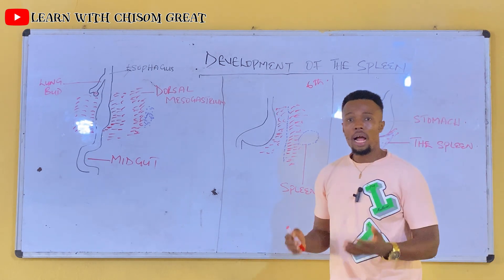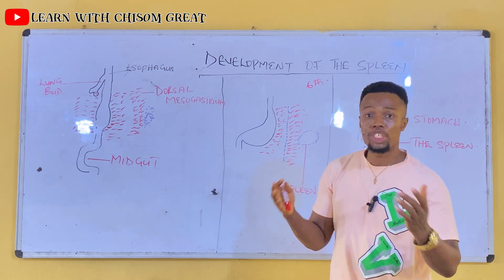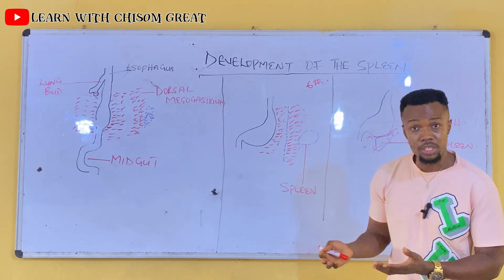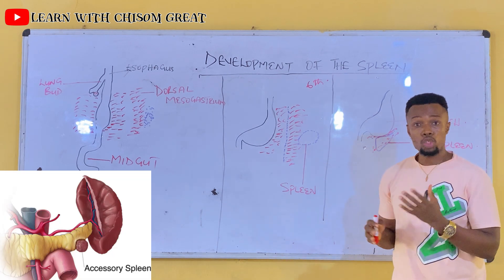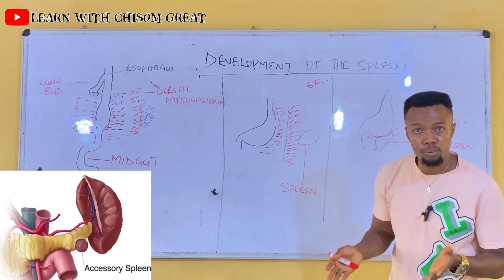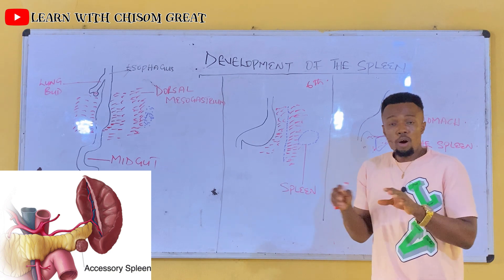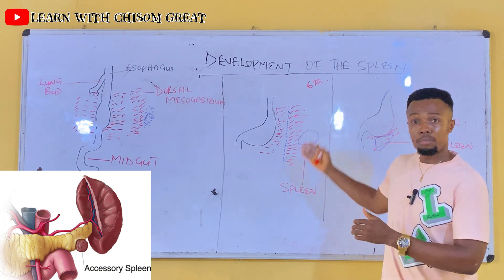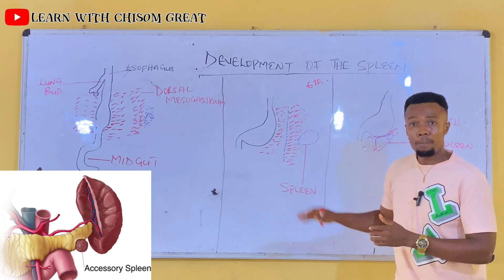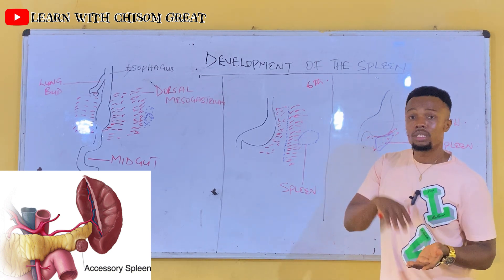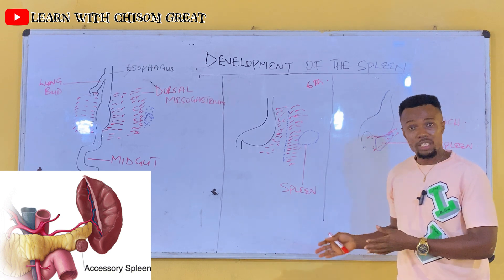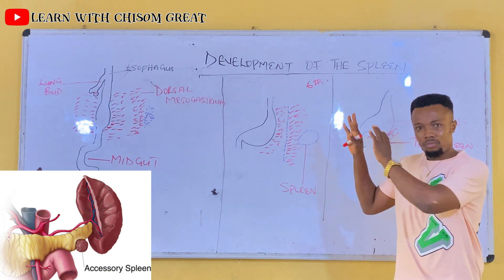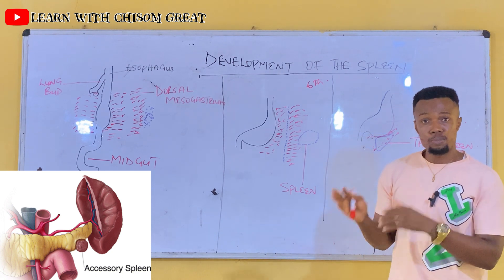Coming to the congenital anomalies of the spleen, we have the accessory spleen. This is a situation where more than one spleen develops. These accessory spleens can be found in the splenic artery, in the gastrosplenic ligament, around the splenorenal ligament, or around the pancreas.